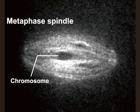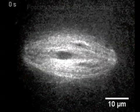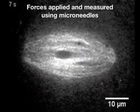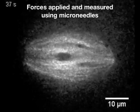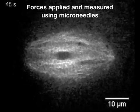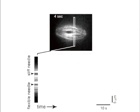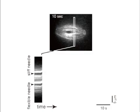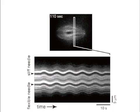Here you see an image of the spindle in this experiment. The two needles appear as two dark spots. The stiff needle was moved back and forth with a sinusoidal function, as you see in this movie. What you see here is the deformation of the spindle that results from the forces applied by the stiff needle.